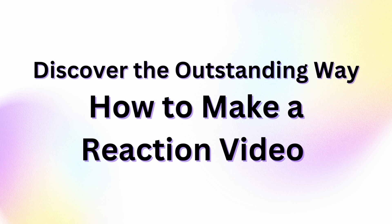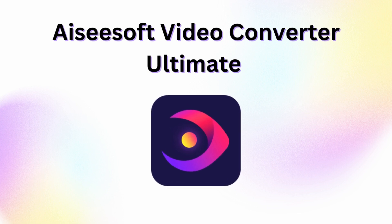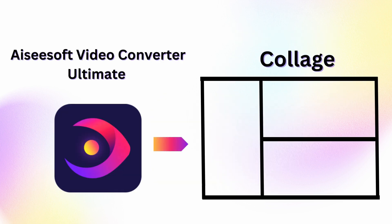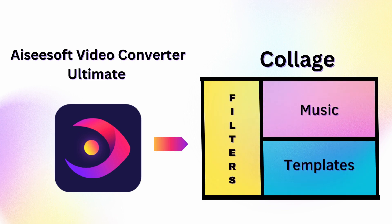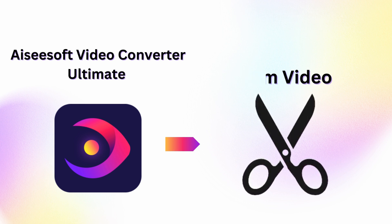Discover the outstanding way how to make a reaction video with Asus of Video Converter Ultimate. Asus of Video Converter Ultimate has a built-in collage feature that allows you to watch your videos separately using one screen. This tool has filters, music, and templates that you can apply to your project to make it more appealing and lively.